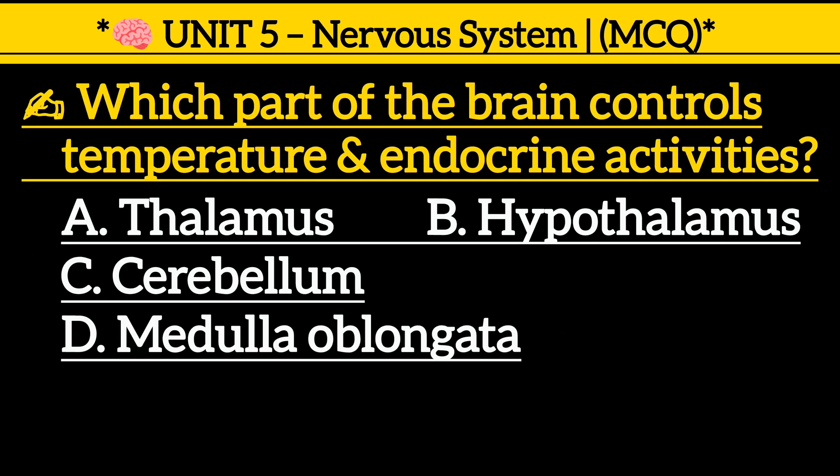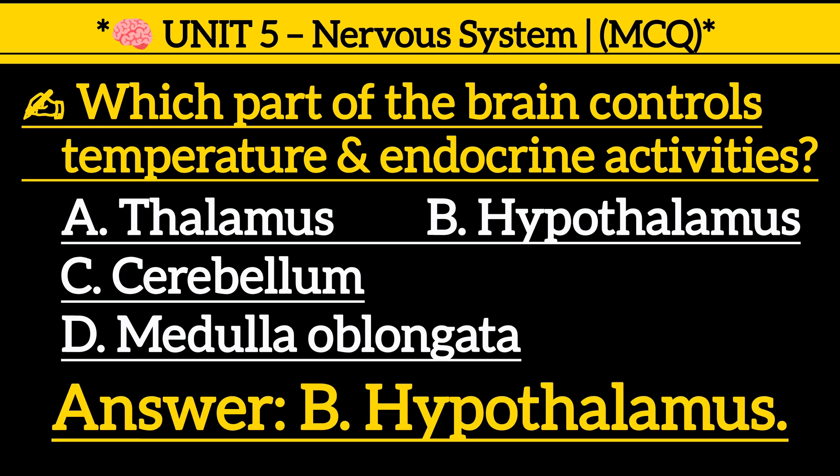Which part of the brain controls temperature and endocrine activities? Option A, thalamus. Option B, hypothalamus. Option C, cerebellum. Option D, medulla oblongata. Correct answer is Option B, hypothalamus.